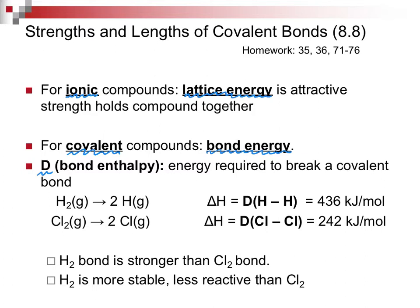If you look at the two equations I've written here, we have a molecule of hydrogen. It is broken down into two atoms, and this is an endothermic process. It takes 436 kilojoules. If I look at a molecule of chlorine, to break it into two chlorine atoms, it only takes 242 kilojoules of energy. So, the really important feature on this first slide is the hydrogen bond is stronger than the chlorine bond, and we also say the hydrogen is more stable and it's less reactive than a chlorine molecule.